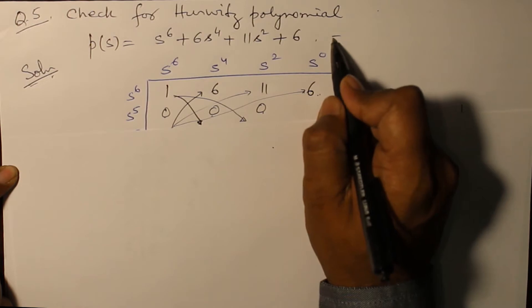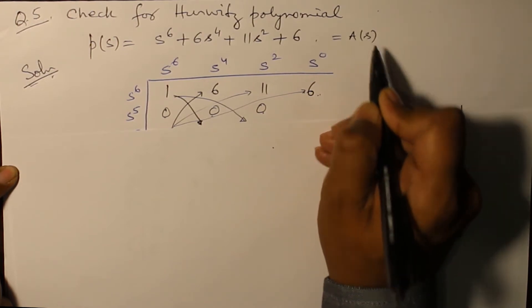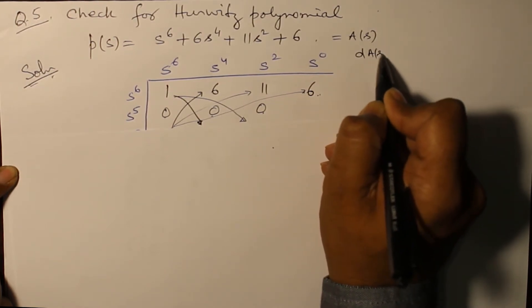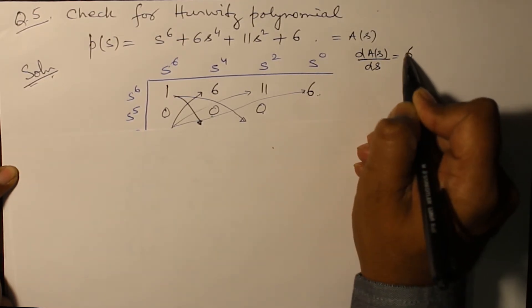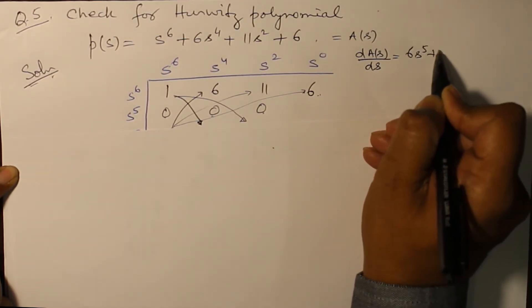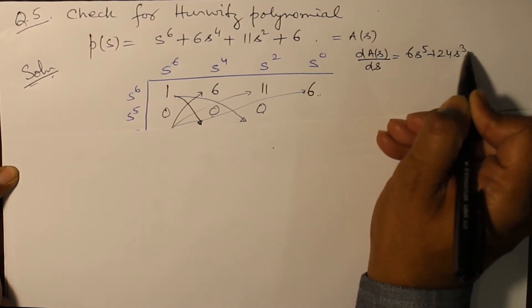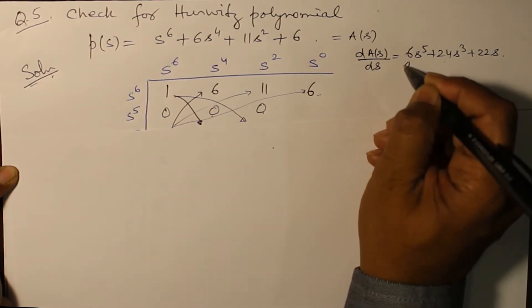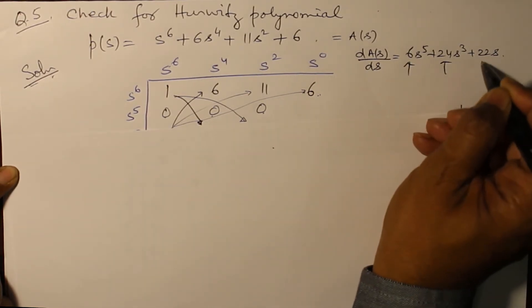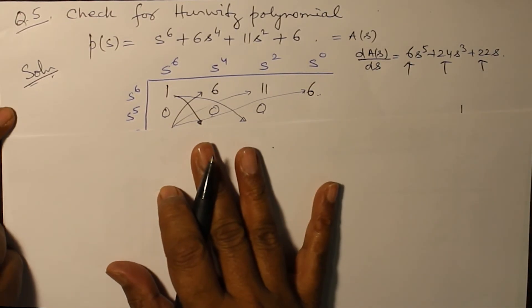A(s) - so this becomes A(s). We differentiate A(s) with respect to s and that gives you 6s^5 plus 24s^3 plus 22s.